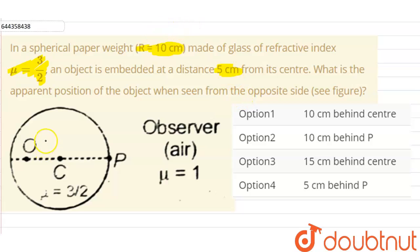So we have been given that a spherical paper weight having a radius of curvature as 10 cm. So this distance is given to us as 10 cm.